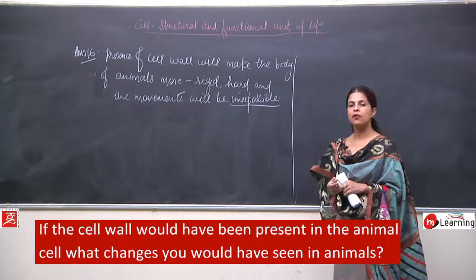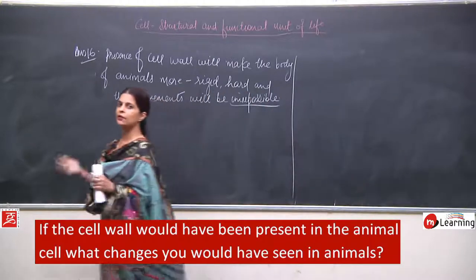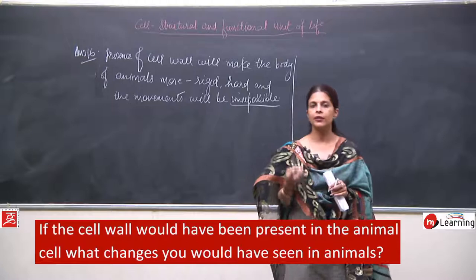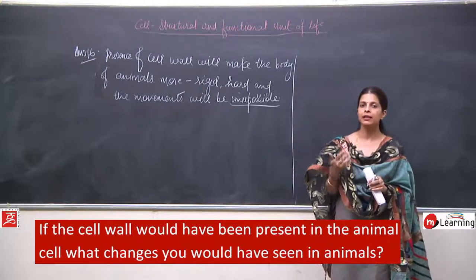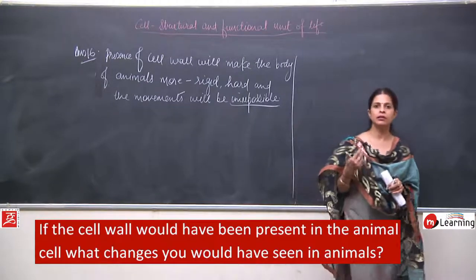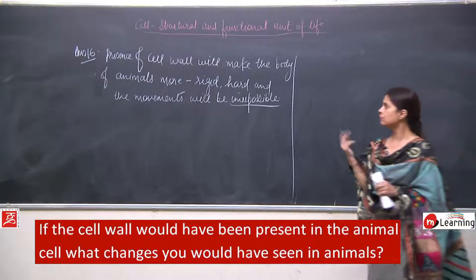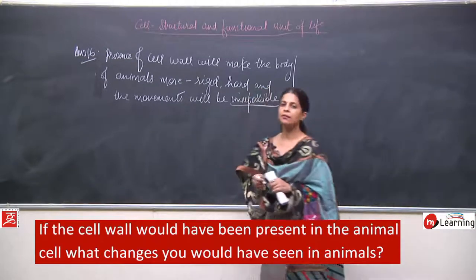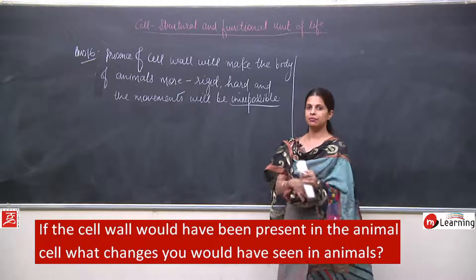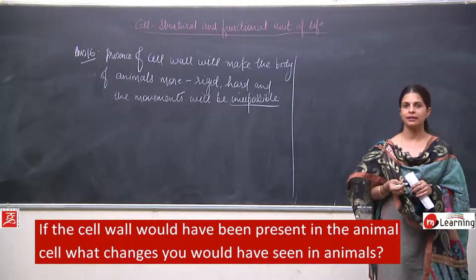If cell walls were given to animals, movements would become very difficult and we would not be able to move freely. Even a new question can be framed: why do plants not have a skeleton? Because they have a cell wall. The cell wall works in plants to make the structure rigid, firm, hard, and strong — but this is not required in animals, so it is not present there.